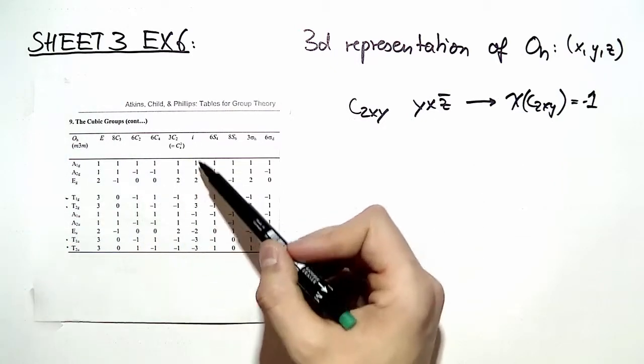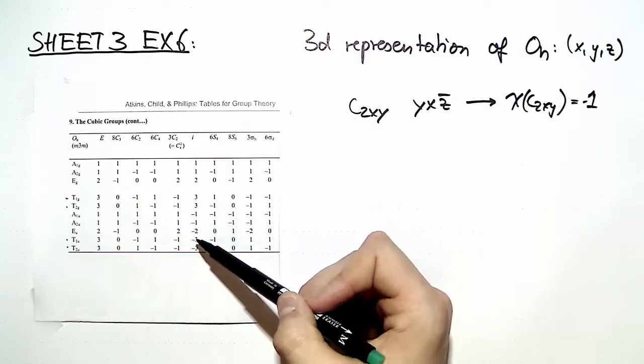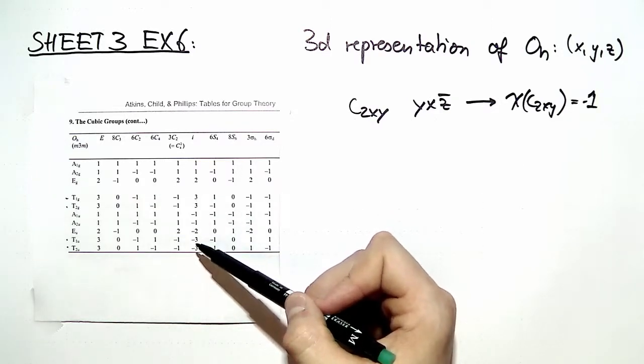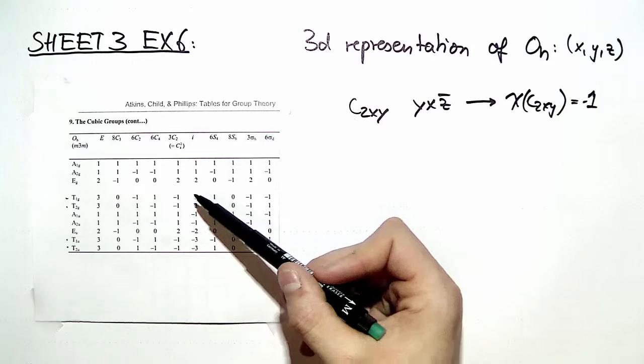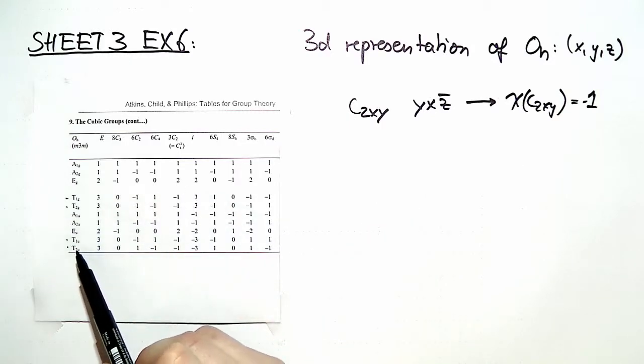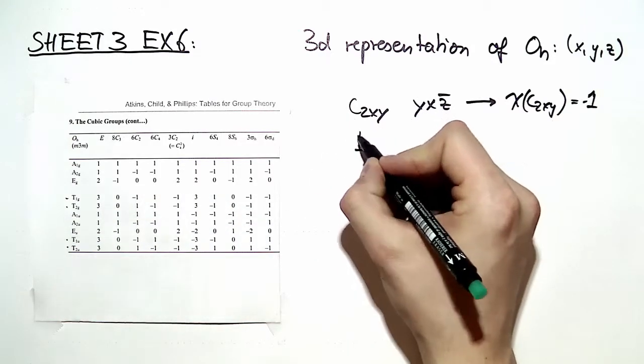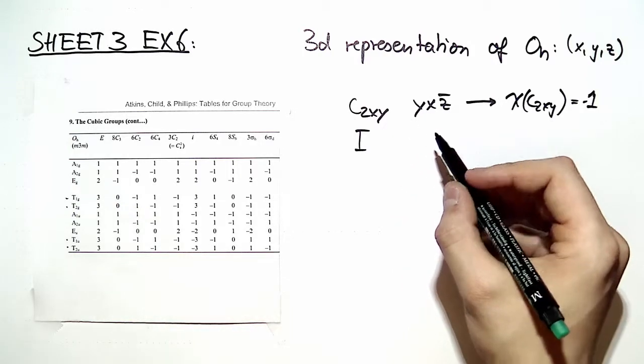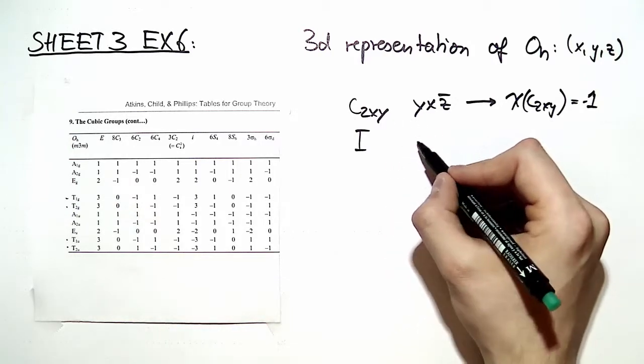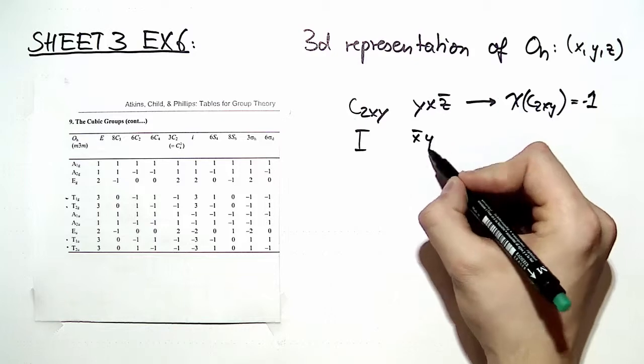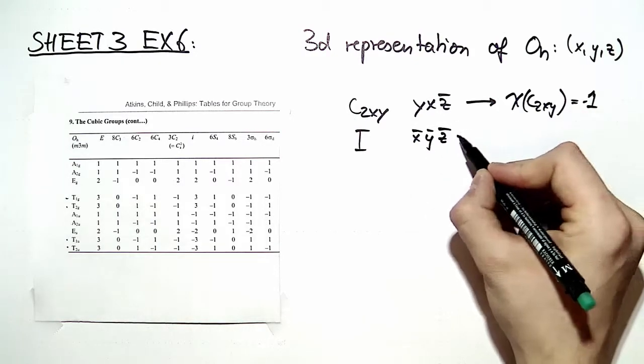Next, we want to see how the identity element transforms according to our representation and deduce whether it is t1g or t1u. We do that in the same way we did it with c2xy. We take the inversion, and this is given by inverting simply every element.